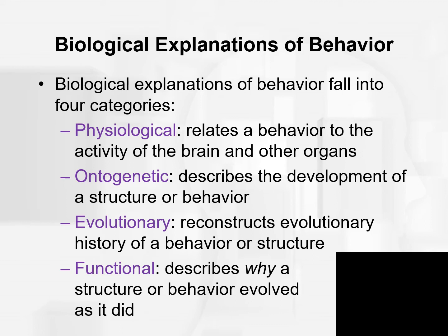Evolutionary explanations of behavior involve reconstructing the evolutionary history of a behavior or structure, or these ancestral relations of who and what we are related to. Kalat distinguishes evolutionary explanations from functional explanations. Functional explanations describe why a structure or behavior evolved as it did — what adaptive advantage did it give us? So functional explanations focus on those adaptive features and how they allow for natural selection.